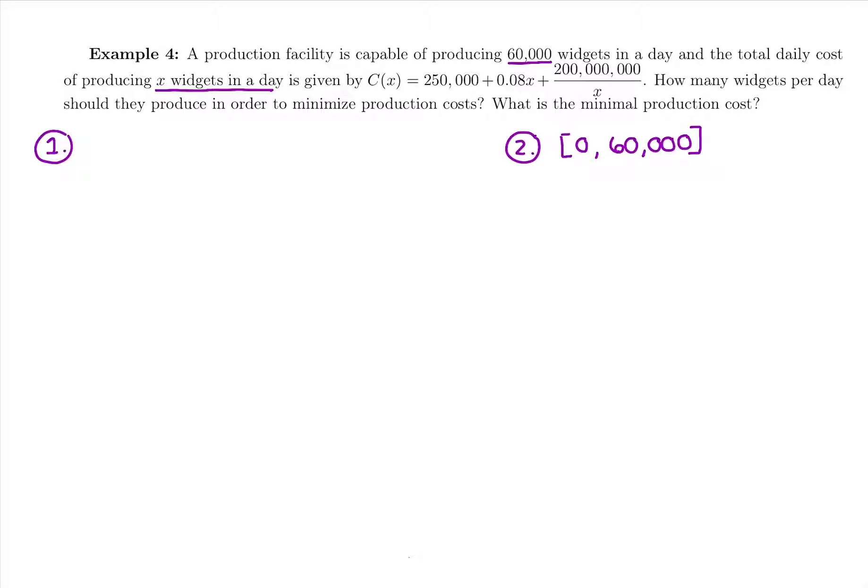We're going to start by taking the derivative of C(x). I noticed C(x) has a fraction in it, so I don't want to use the quotient rule for that fraction. Instead, I'm going to rewrite C(x). We're going to write 250,000 + 0.08x + 200,000,000 times x to the negative power, x to the negative one, because we're going to pull it out of the denominator.